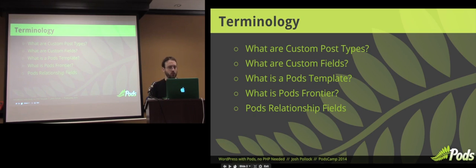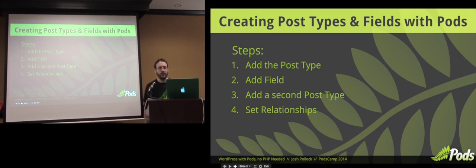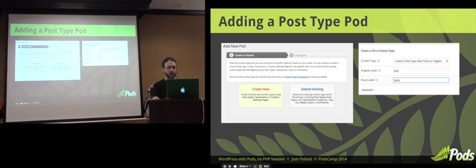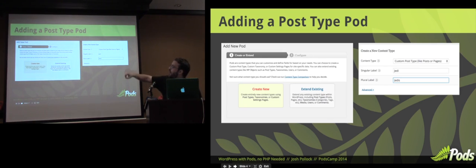That's what we're going to be looking at today. So, creating post types and fields with Pods — our steps are going to be: add a post type, add a field, add a second post type, and then set a relationship between these two post types. Adding post types in Pods is pretty simple. We go in, we create a new one, we select the post type, we give it a name, we give it a plural name.